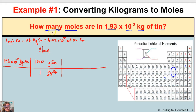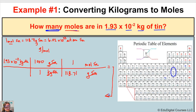We're not asked for grams of tin — we need moles of tin — so we take it one step further. We put grams of tin in the denominator and moles of tin in the numerator of the next conversion fraction. The relationship between moles and grams of tin comes from our periodic table: one mole of tin equals 118.71 grams of tin. Grams of tin in numerator and denominator now cancel, leaving us with moles of tin — exactly what the question asked for.